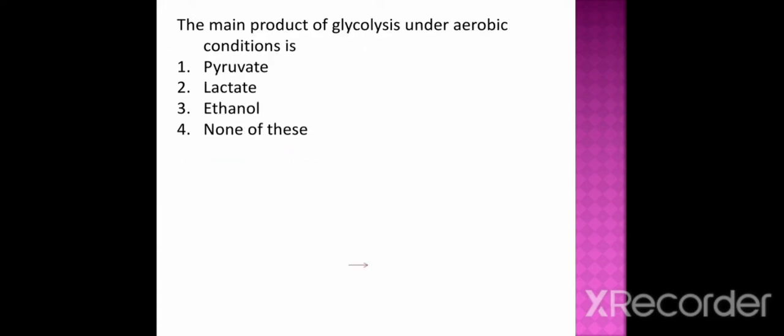Next question: the main product of glycolysis under aerobic conditions is option 1 pyruvate, option 2 lactate, option 3 ethanol, option 4 none of these. And the correct option is pyruvate.